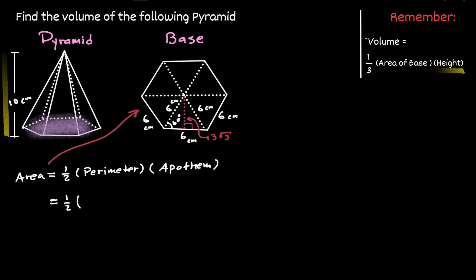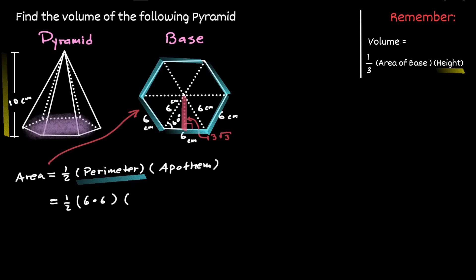To find the perimeter we know that the sides of a regular polygon are equal to each other. Notice that each side has a value of 6 centimeters. So if each side is equivalent to 6 centimeters and there are 6 sides in this regular polygon, then the perimeter will be 6 times 6. Remember that the apothem is the height of one of the triangles in a regular polygon, and we are given that measurement — it is 3 times the square root of 3.